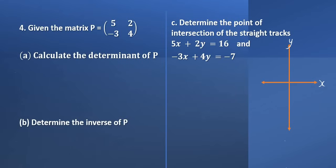Question 4. Given the matrix P equals a 2 by 2 matrix, calculate the determinant of P. So we write the determinant of P — symbolically, that's how we write the determinant of P.